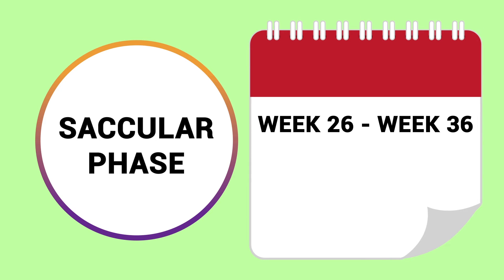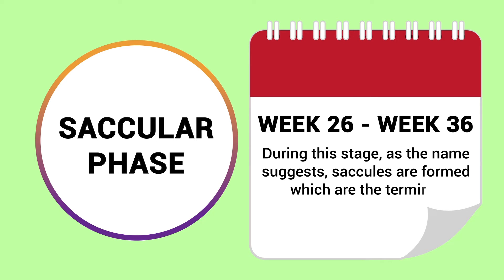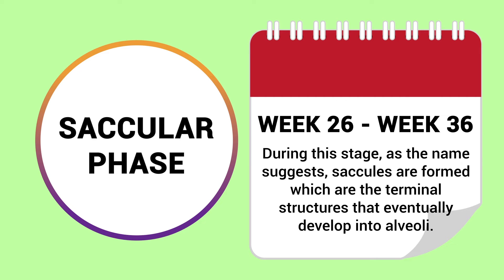Next there is the saccular phase. This phase occurs from approximately week 26 to week 36, and this is the final stage of development that occurs before birth. During this stage, as the name suggests, saccules are formed, which are the terminal structures that eventually develop into alveoli.